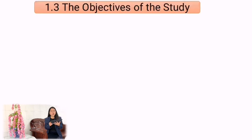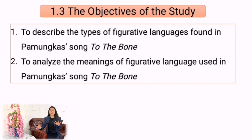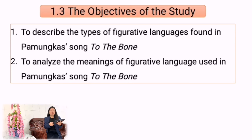In 1.3, the objectives of the study, it is a continuation of 1.2, the problems of the study. Since problem number one asks about types, the objective number one should be to describe the types of figurative language found in Pamukka's song 'To the Bone.' The second problem is about meaning, so objective number two will be to analyze the meanings of figurative language used in Pamukka's song 'To the Bone.'